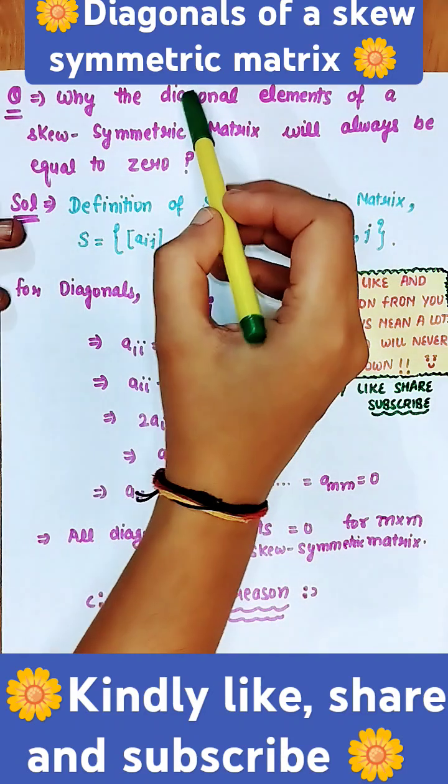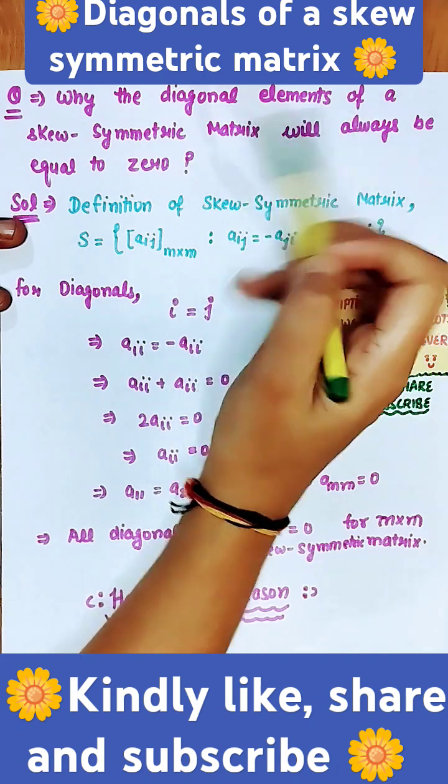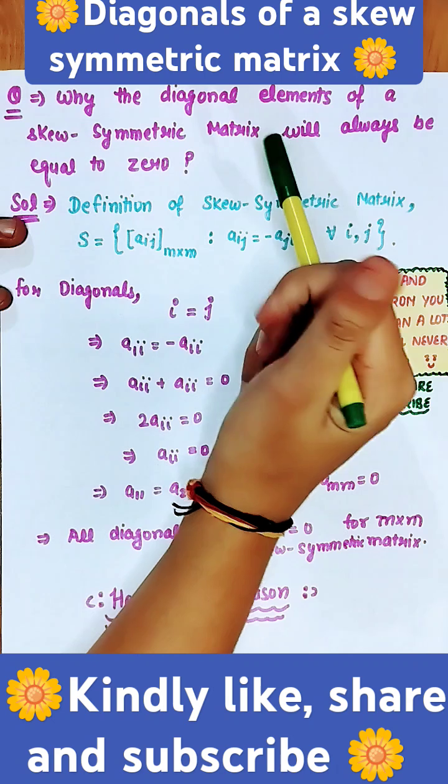Welcome future IT. Did you know the reason why the diagonal elements of a skew-symmetric matrix will always be equal to 0? If you do not know, then this video is for you.